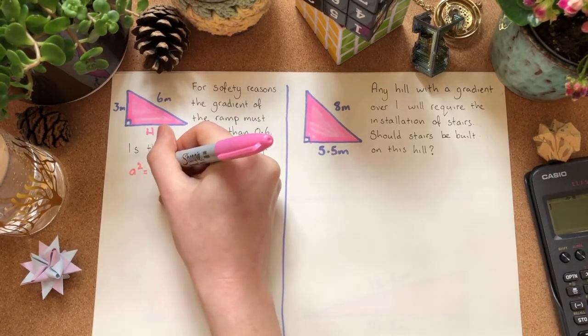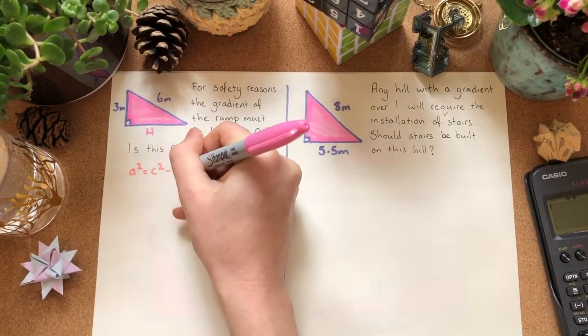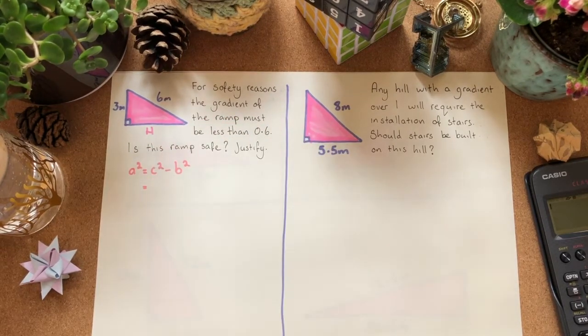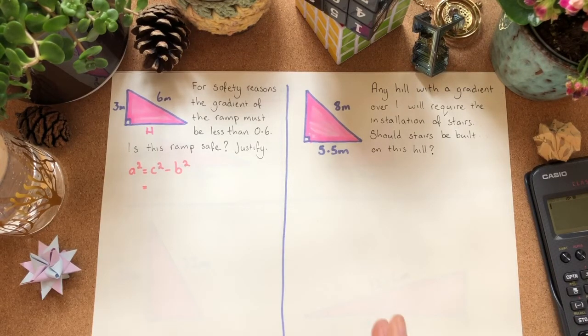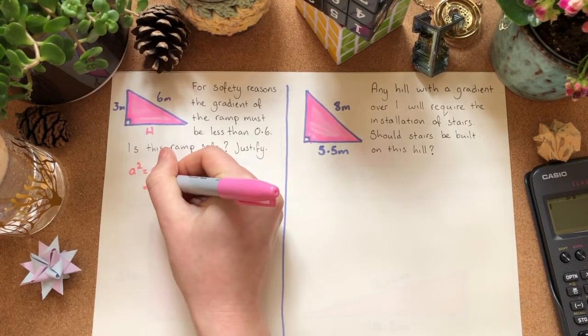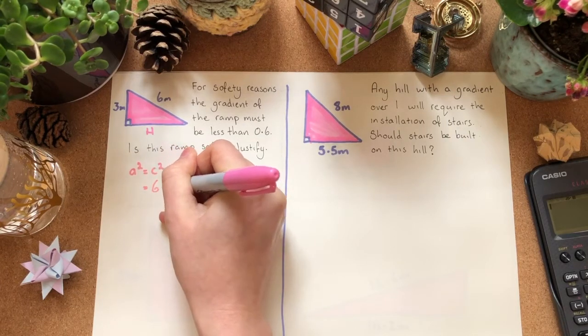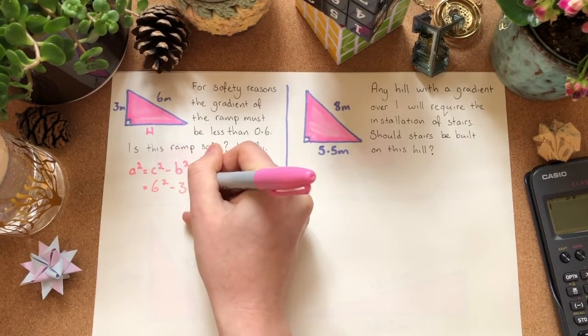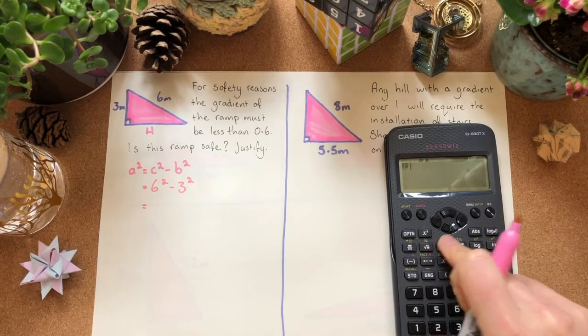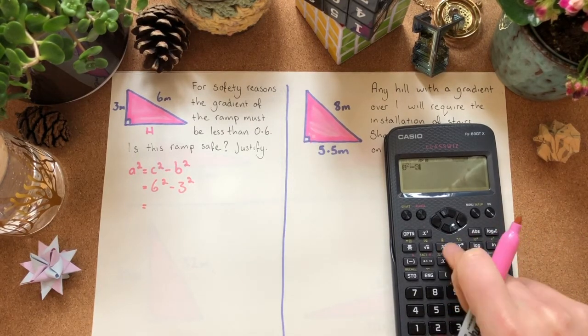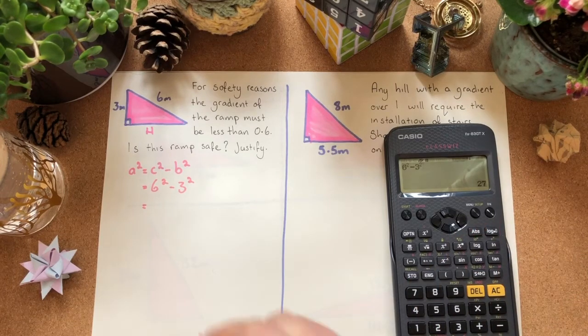Starting with my formula, a squared equals c squared minus b squared. I'm now going to do my substitution. Because I don't want a negative answer, there's no such thing as negative length, I'm going to have to make sure that the bigger number comes first. So, 6 squared minus 3 squared. We can calculate that using the square button on our calculator. You can type this in all at once. 6 squared minus 3 squared is 27.